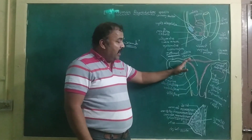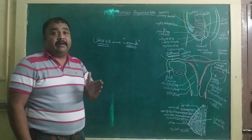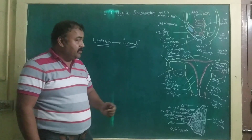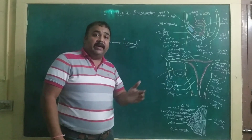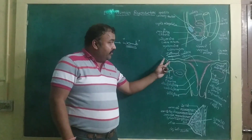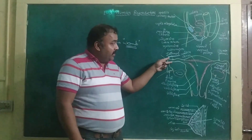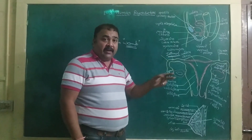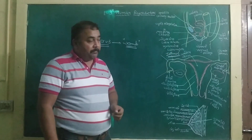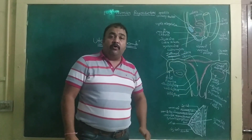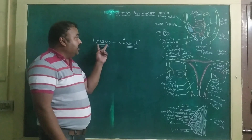We can conclude that a fallopian tube contains three different structures: the proximal part, which is known as the infundibulum; the wider part, that is known as the ampulla; and the inner, narrower part, which is known as the isthmus. The next organ is the uterus.